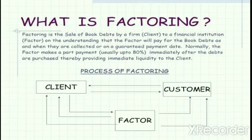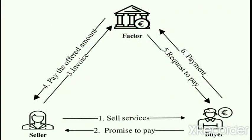Now let me move on to the process of factoring. Three important persons are involved: the client, the customer, and the factor. The first process involves the selling of goods or services by the seller to the buyer, who in turn promises to pay to the seller.